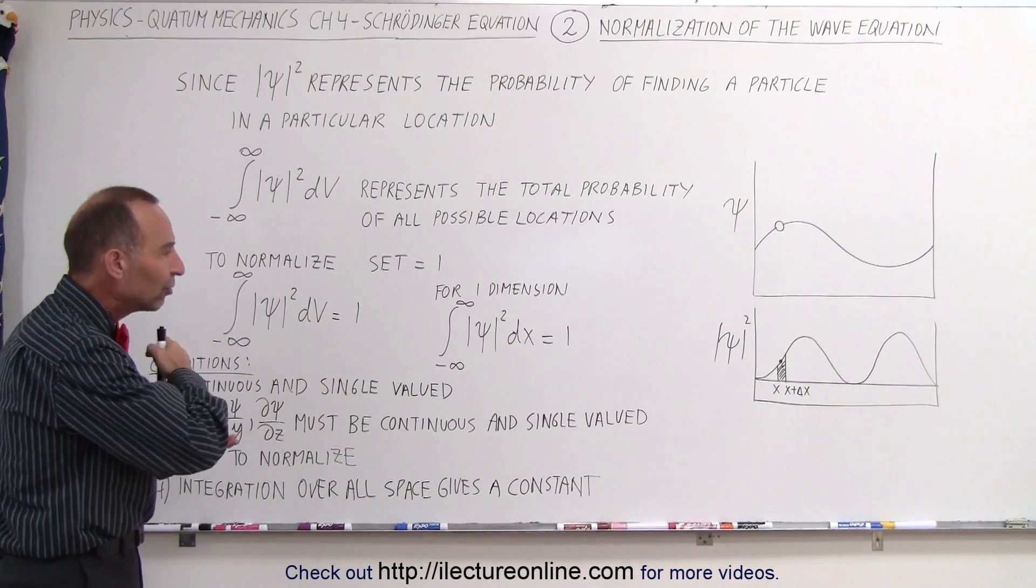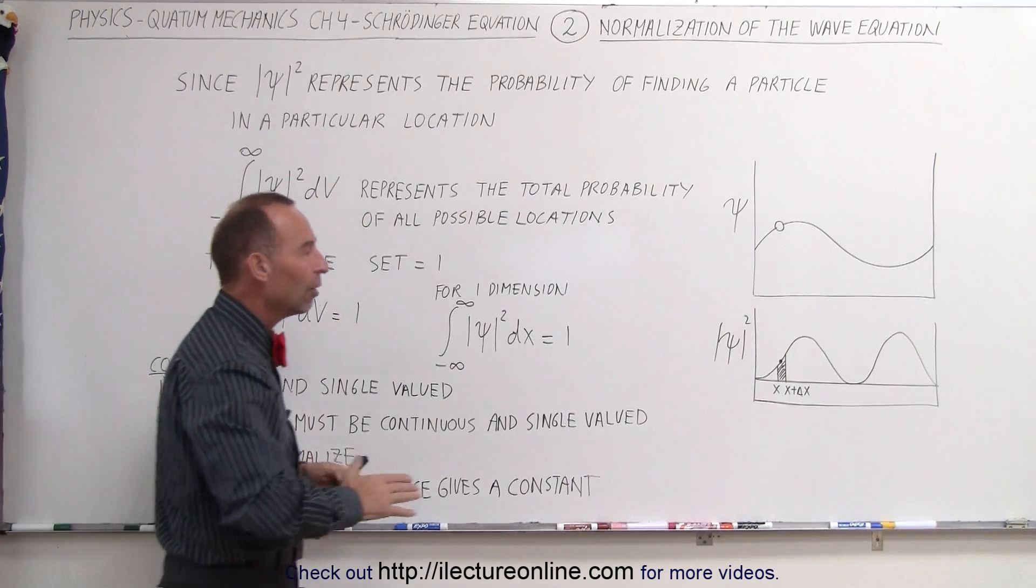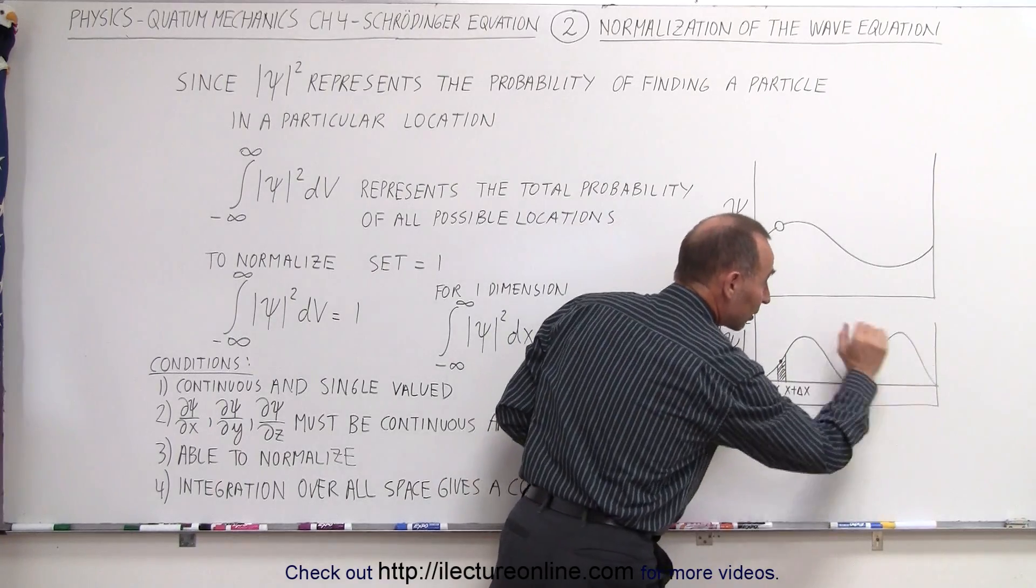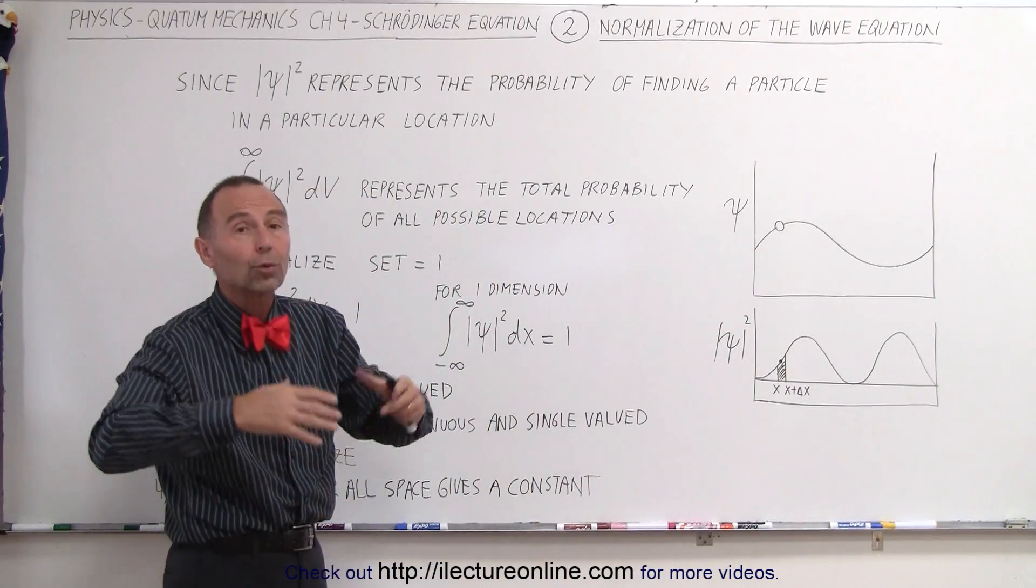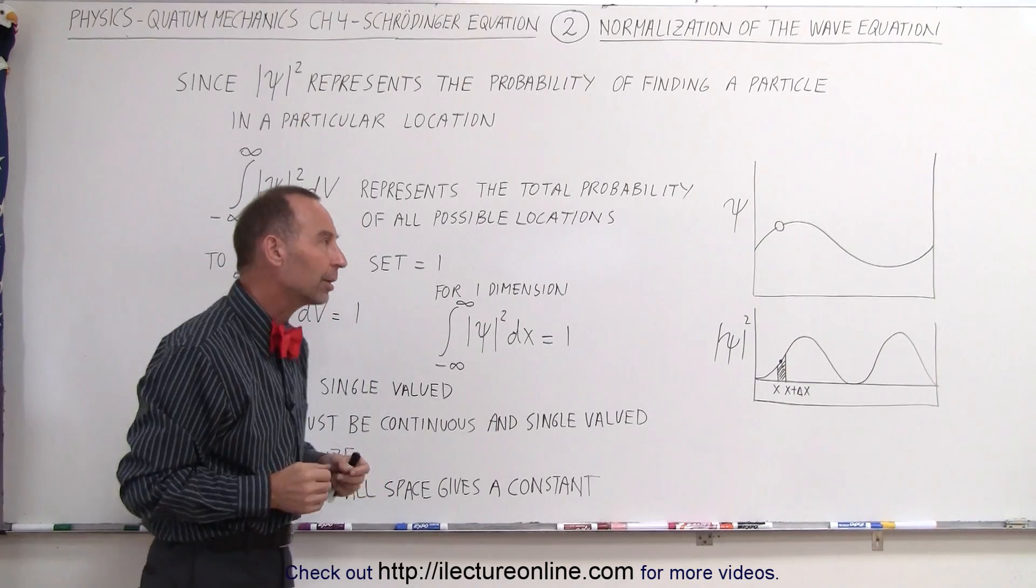If we then sum up all those probabilities of all the various locations where the particle can be, that gives us the total probability of all locations of that particular particle.